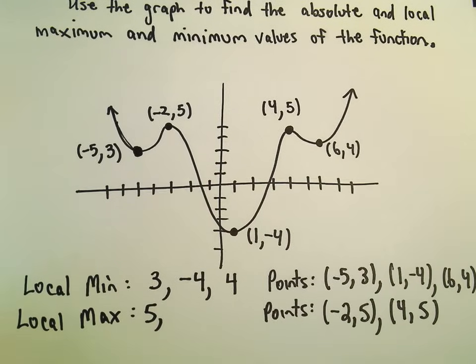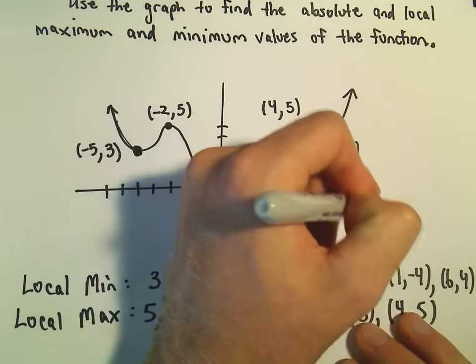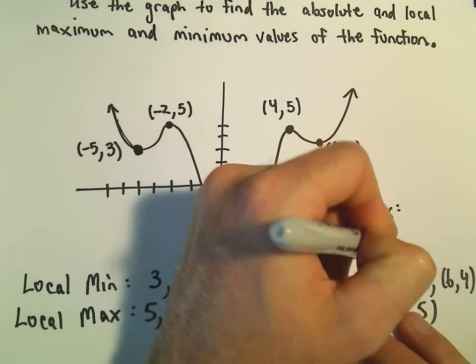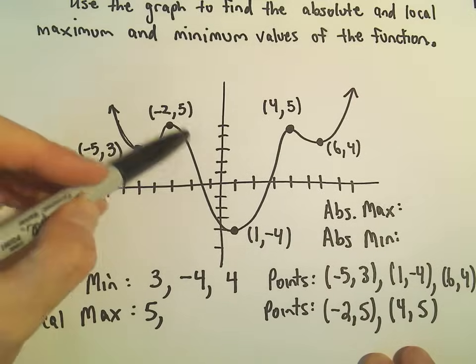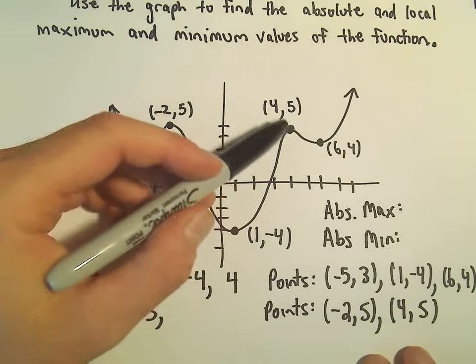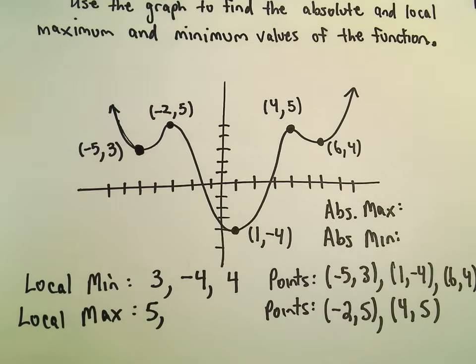So that takes care of local maximums and minimums. When we talk about the absolute maximum and the absolute minimum, now we're just thinking of all the y values. If I were to list every single y value on this graph, all infinitely many of them, I'm just thinking what would be the largest y value that ever gets used if there is one, and what would be the smallest y value that ever gets used if there is one.